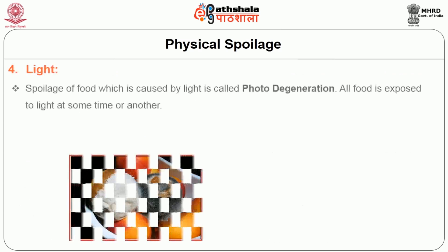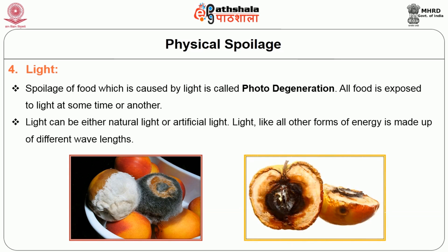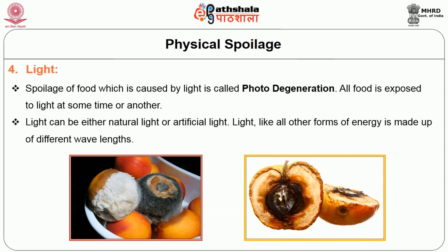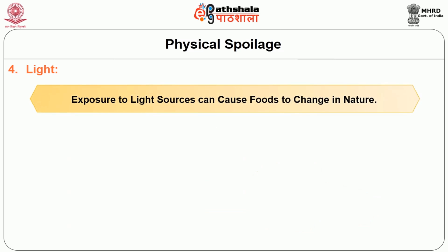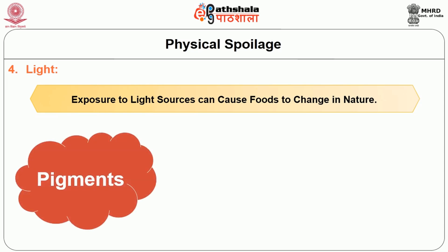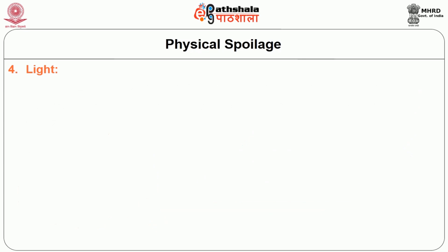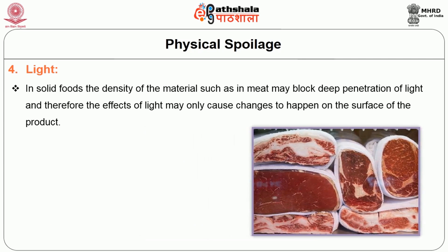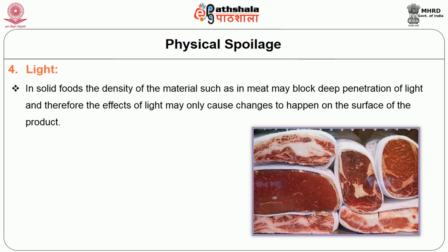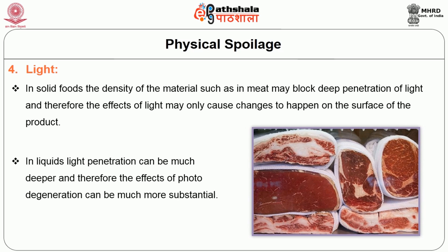Spoilage of food caused by light is called photodegradation. All food is exposed to light at some time or another — either natural or artificial light. Light, like other forms of energy, is made up of different wavelengths. Exposure to light sources can cause foods to change in nature; pigments may change, as may vitamin levels, fats, and proteins. In solid foods, the density of the material such as in meat may block deep penetration of light, and therefore the effect may only cause changes to happen on the surface of the product. In liquids, light penetration can be much deeper and therefore the effect of photodegradation can be much more substantial.